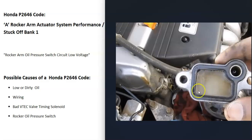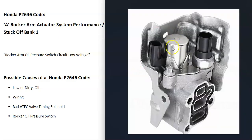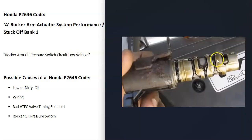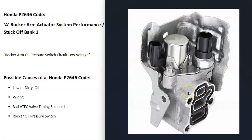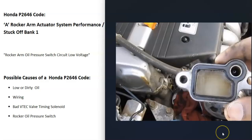If the oil pressure switch is good and there are no wiring issues, you'll want to check all these small screens. There's also a solenoid right here that slides in and out — it can also get clogged and dirty. Some mechanics, when they get this code, clean up those screens and then replace the whole VTEC assembly, which includes the pressure switch, the solenoid, and everything combined with it.